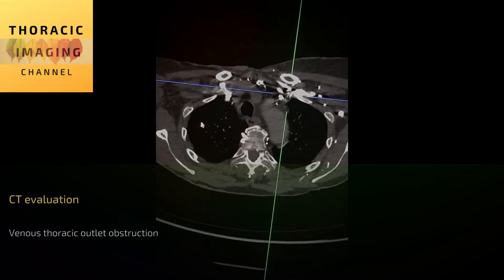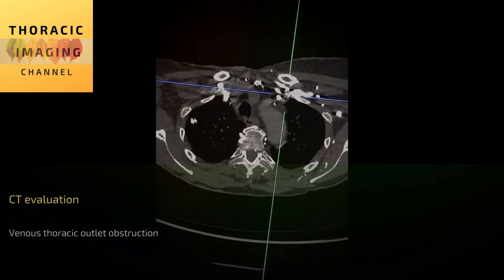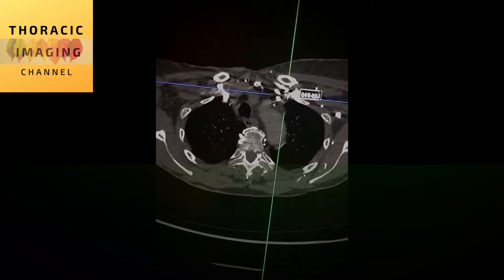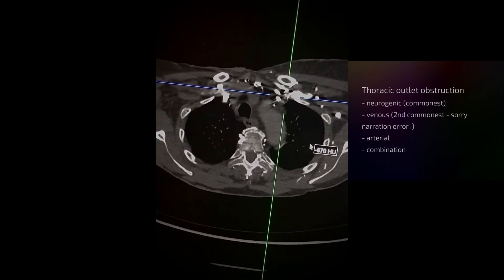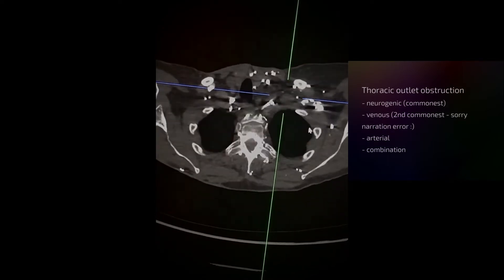In this video we're going to look at some of the CT features of venous thoracic outlet obstruction, which is considered the commonest form of thoracic outlet obstruction with the others being arterial and neurogenic.